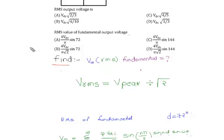The fundamental output voltage RMS is nothing but the peak value of the sine wave divided by root 2. That is, V_naught RMS = V_peak divided by root 2. This is the condition for the value of fundamental output voltage.